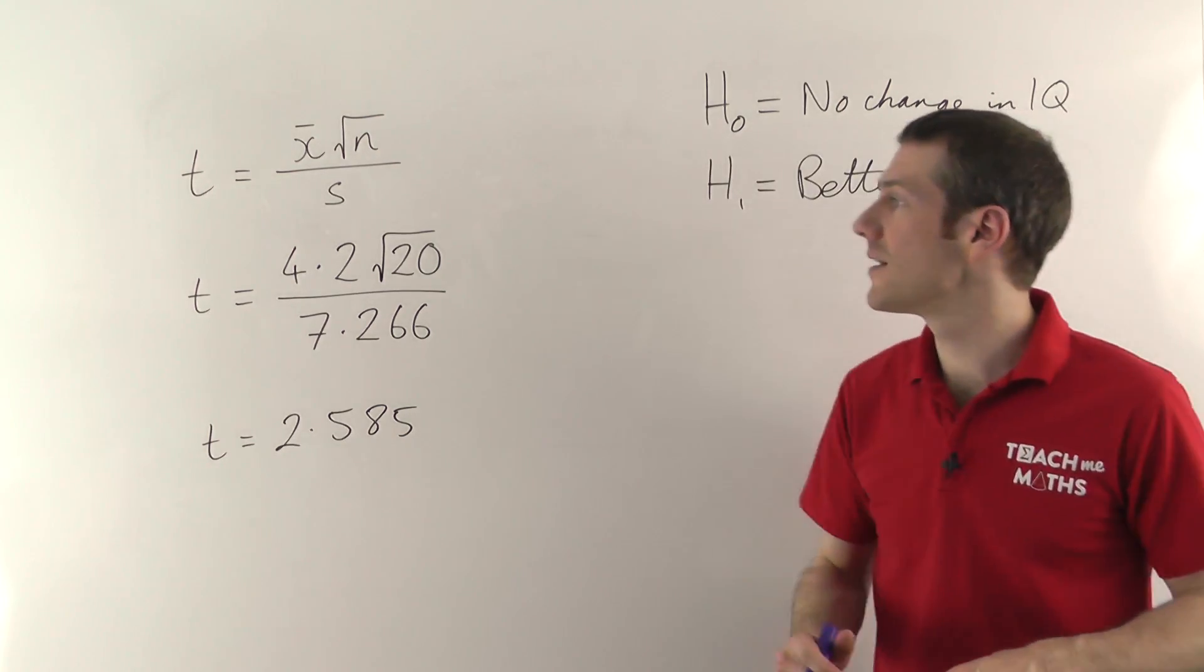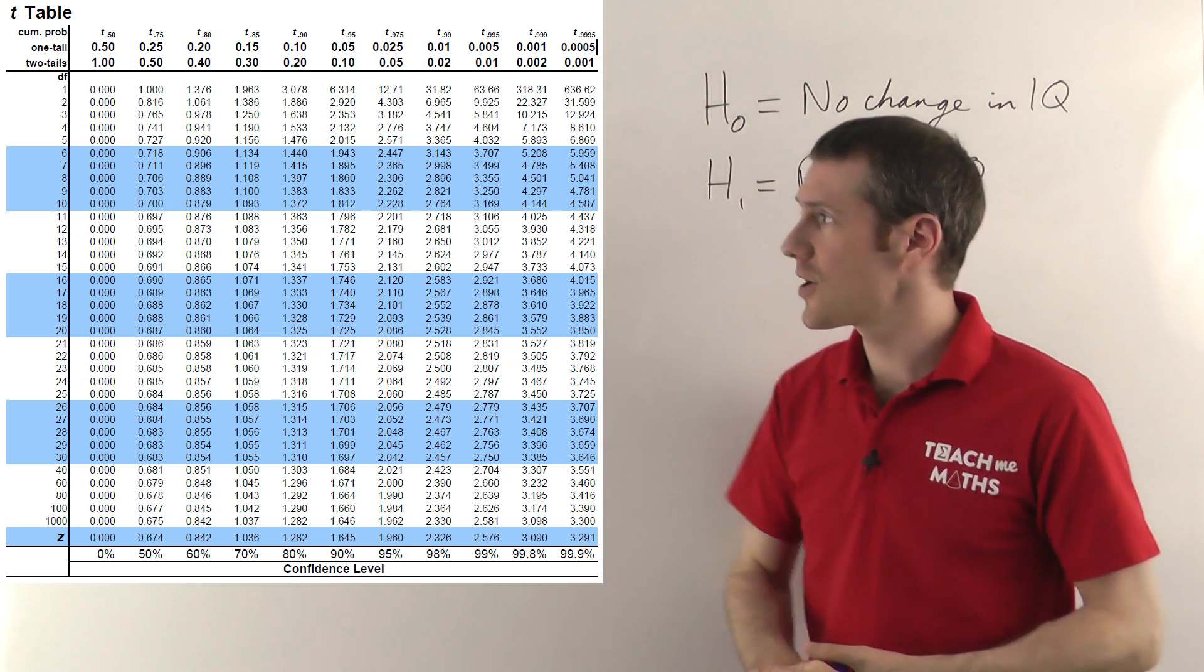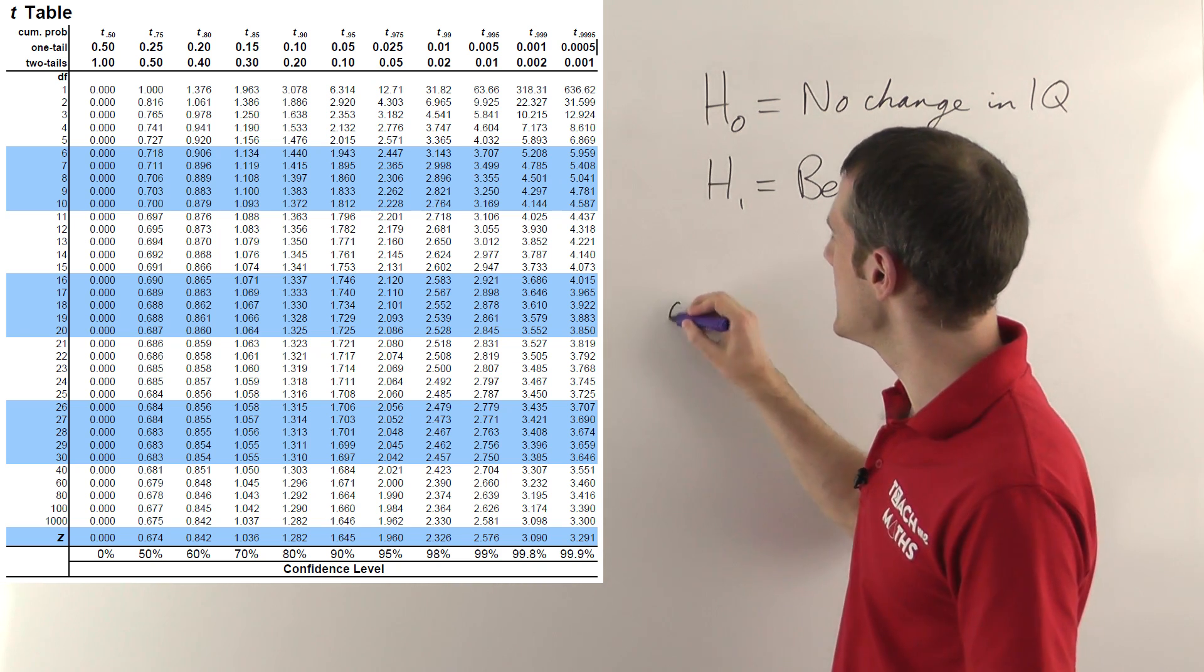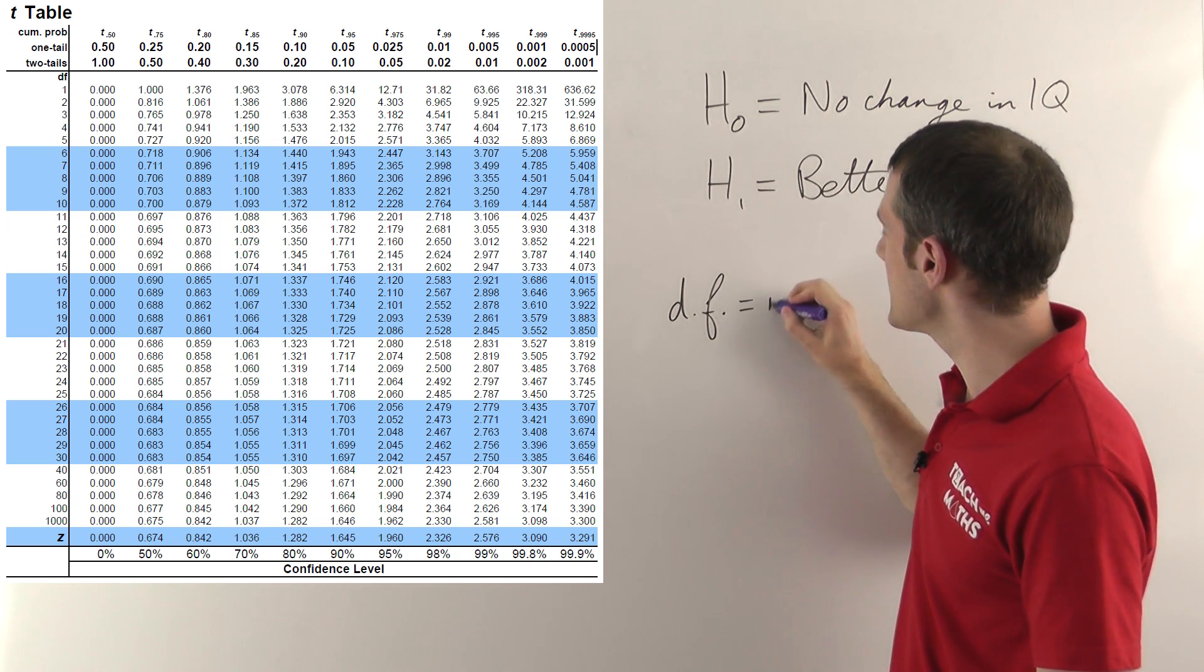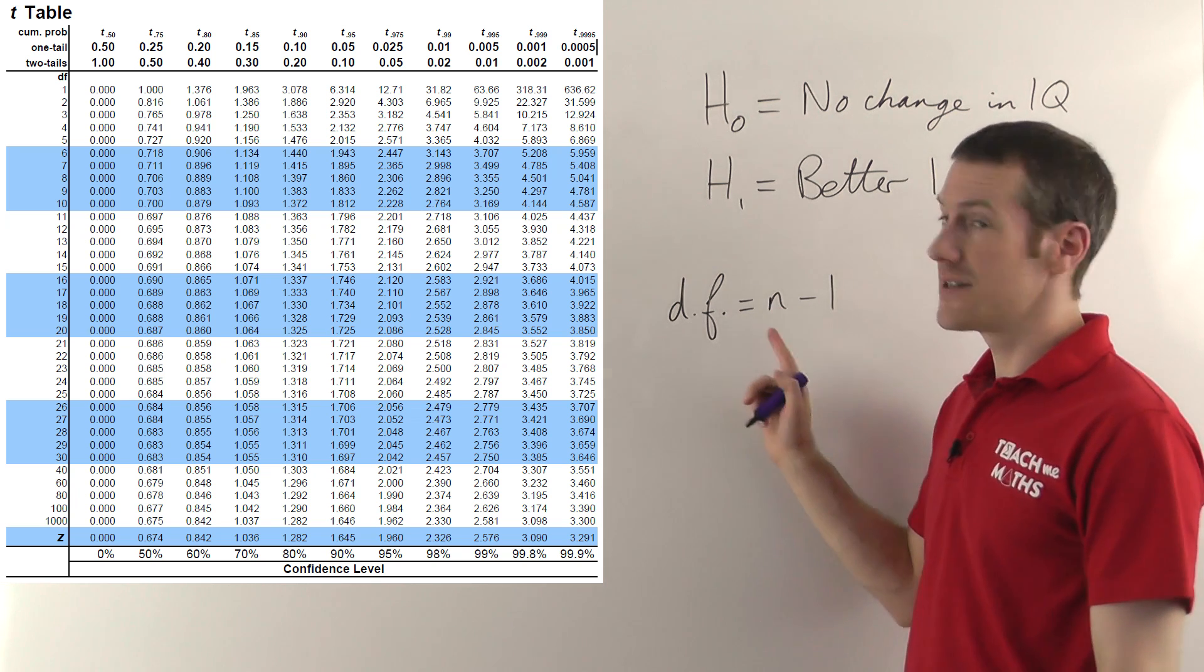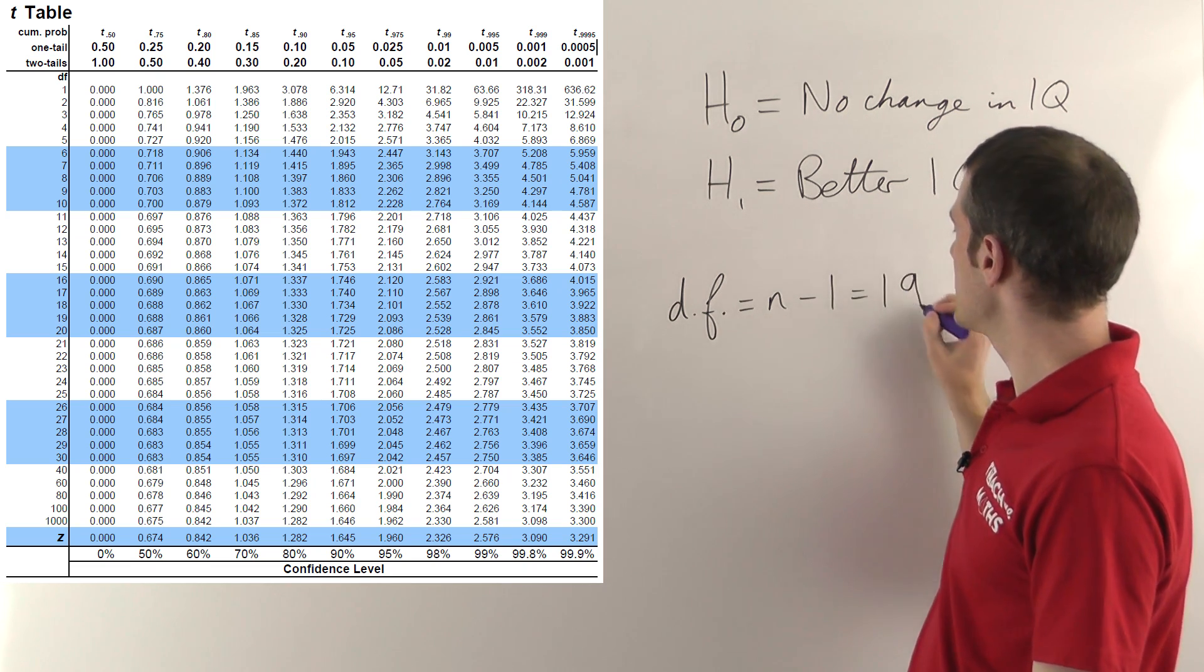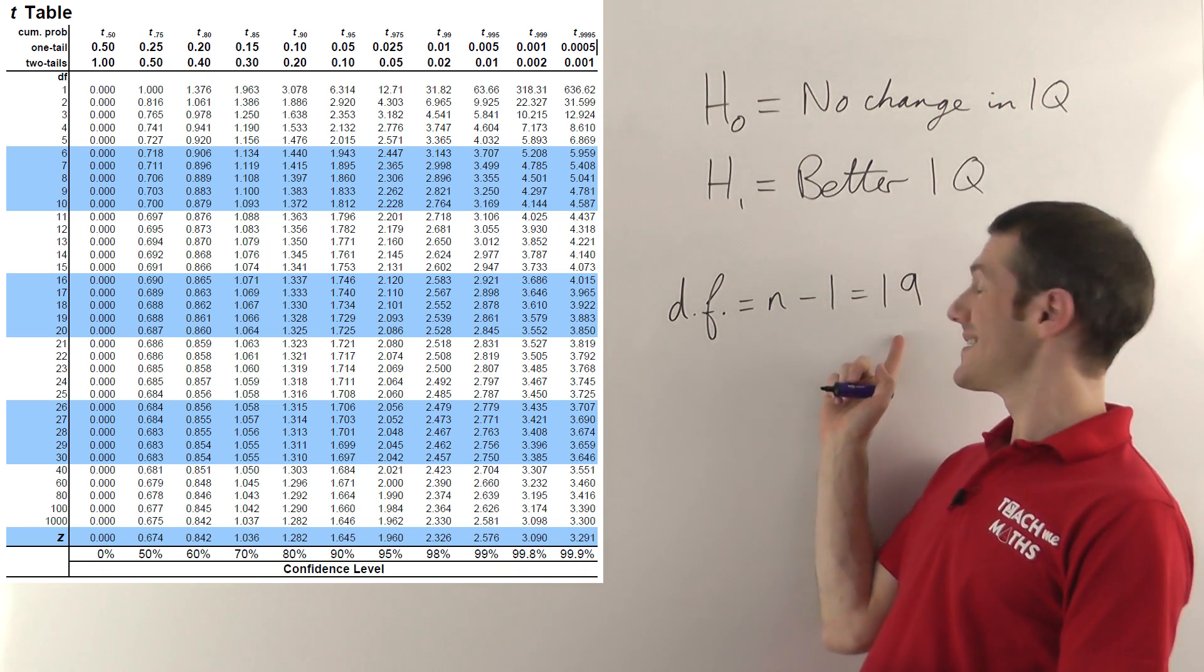So in the t-table, the first thing you've got to notice is the degrees of freedom, which is the numbers down the left-hand side. So the DF, as it's often called, the degrees of freedom is always the number of samples minus 1. This is for a paired t-test. So degrees of freedom is the number of samples minus 1. So in this case, obviously the number of samples is 20, so the degrees of freedom is 19. So we're going to read down the left-hand side of this table until we find 19.